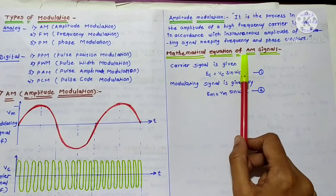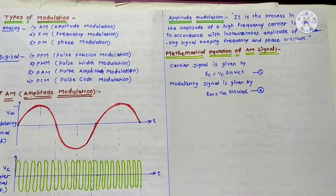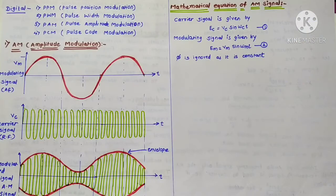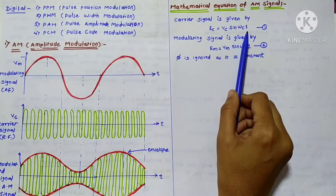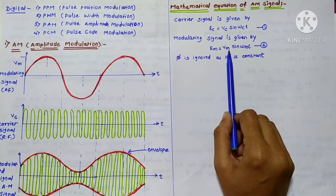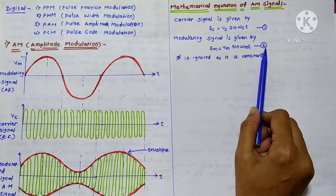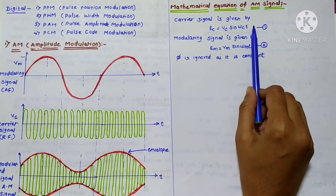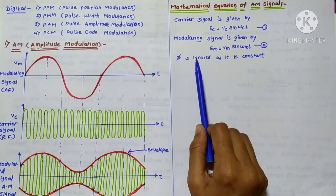Now let us derive the mathematical equation of the amplitude-modulated signal. This equation gives the number of spectral components present in the amplitude-modulated signal. The carrier signal is given by eC = VC sin(ωCt) and the modulating signal is given by eM = VM sin(ωMt). Here, φ is not present in the equation because phase is constant.